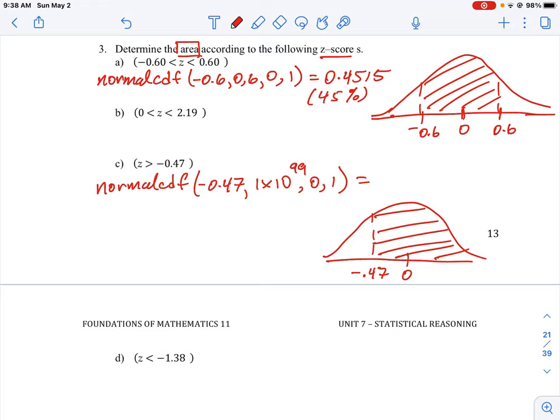If you run that through your calculator you'll get the area of the curve. So this is going to be normal CDF. We're going to put in negative 0.47, and then our second value is 1 times 10 to the 99, and then zero and one, and close. Our answer is 0.6808 or 68% of the curve is covered by values greater than negative 0.47.